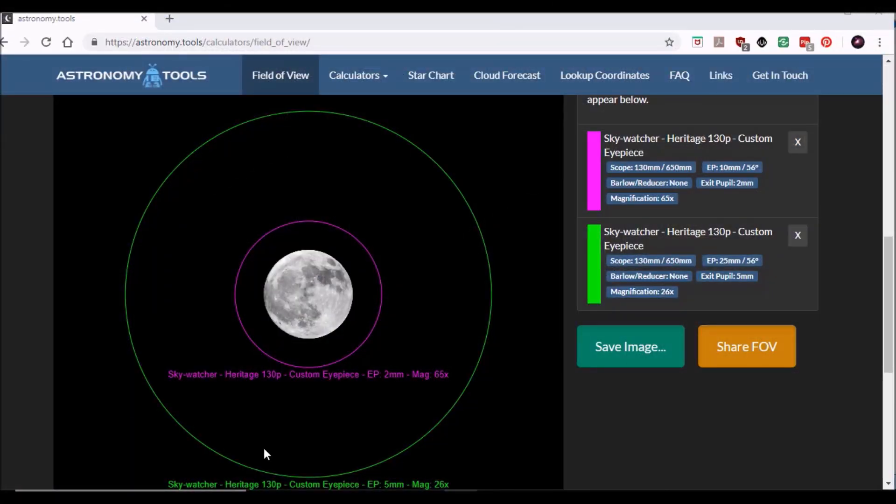And just to illustrate that point, if we look here at the online website Astronomy Tools, you can type in the details of this 130 millimeter telescope and you can see the relative field of view that you're going to get with a 25 millimeter eyepiece here, that's the green circle, and then with the 10 millimeter eyepiece, that's the purple circle. So this just shows you that when you're first looking for an object, it's going to be much easier to use that lower power eyepiece because it just gives you a much bigger field of view.